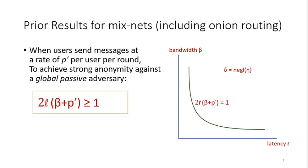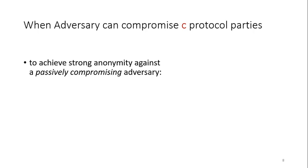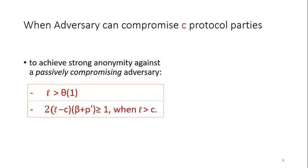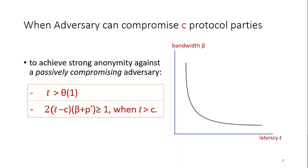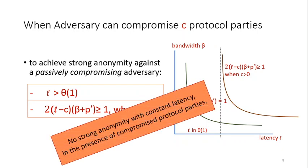This is a parabolic curve representing the necessary constraint for strong anonymity — any protocol above the curve has hope of providing strong anonymity. Additionally, when the adversary can passively compromise some protocol nodes — meaning the adversary can see the internal states of those parties, but they still follow the protocol specification — strong anonymity is impossible with constant latency overhead. The necessary constraint becomes much stricter. The key takeaway: no strong anonymity with constant latency in the presence of compromised protocol parties.